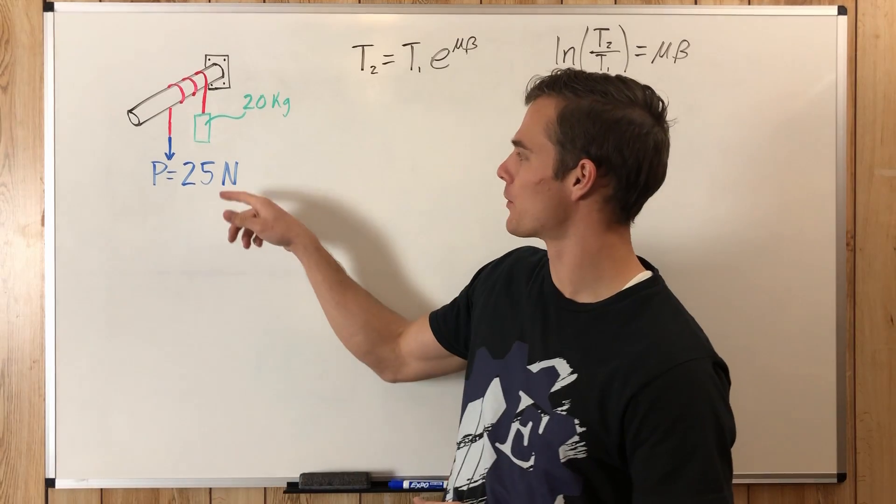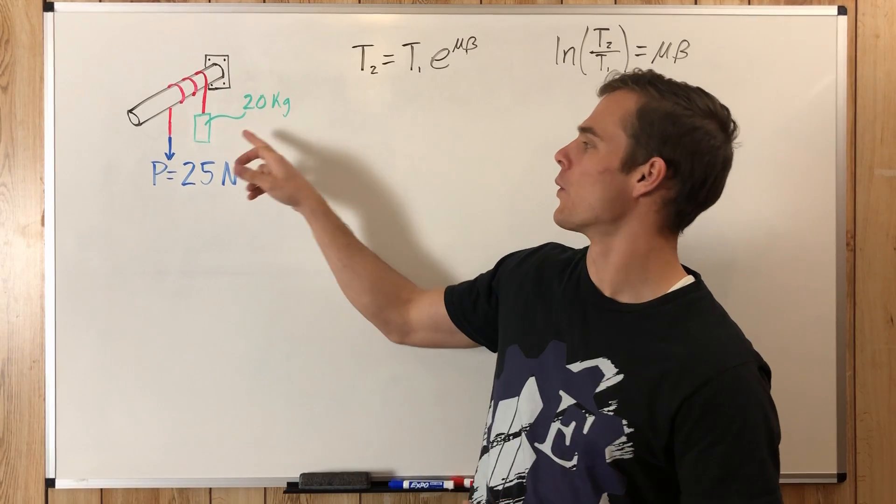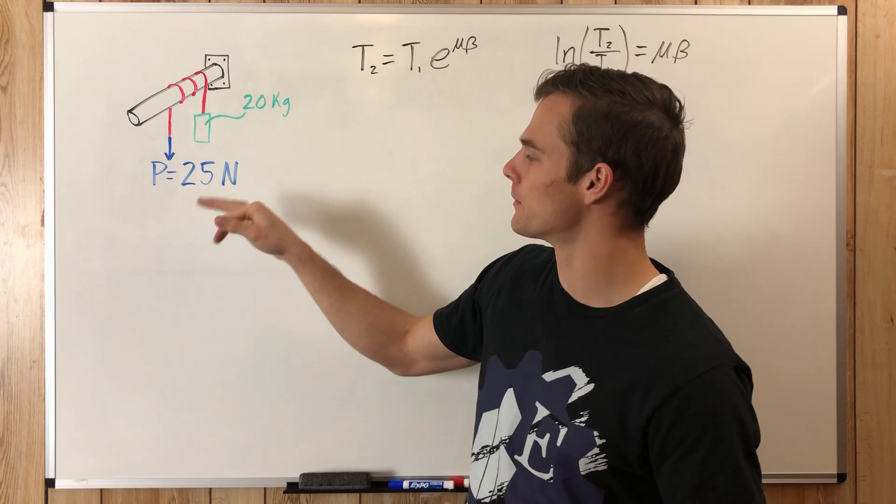Here we have a rod with a rope going over it and a weight hanging off one side and it being pulled on the other side.